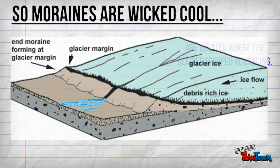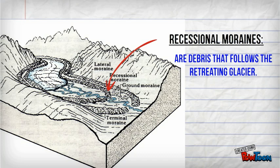Here's a photo to get a closer view. An end moraine or terminal moraine forms at the glacier margin. Recessional moraines are moraines that form as the glacier retreats.